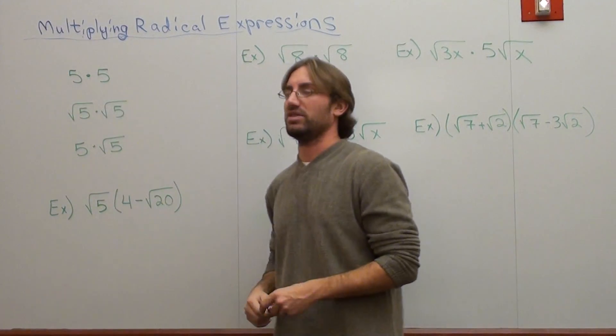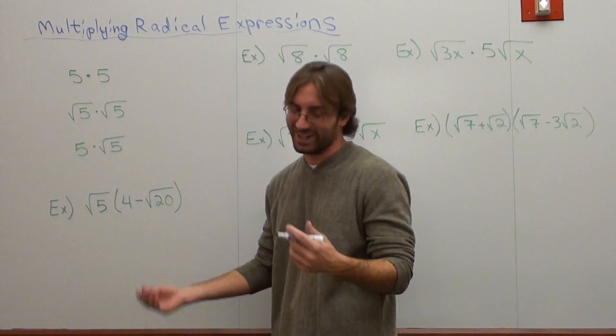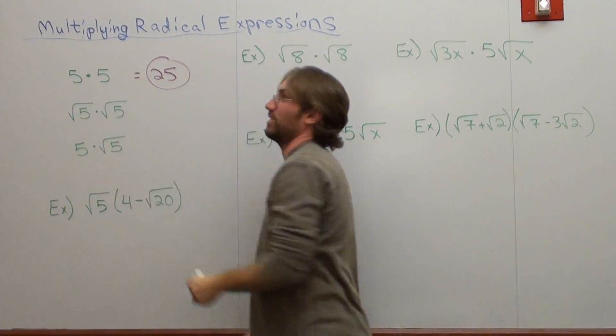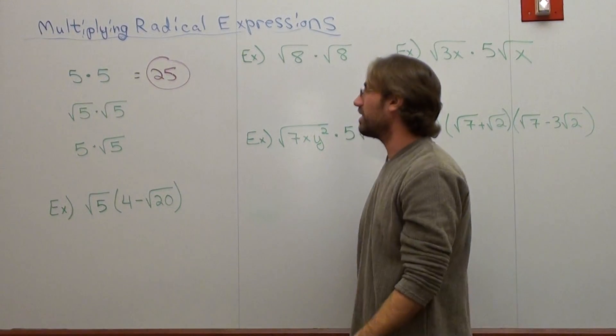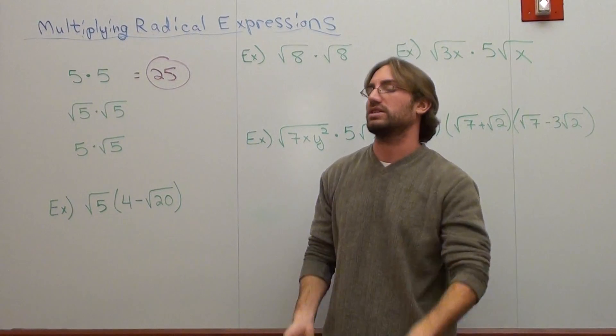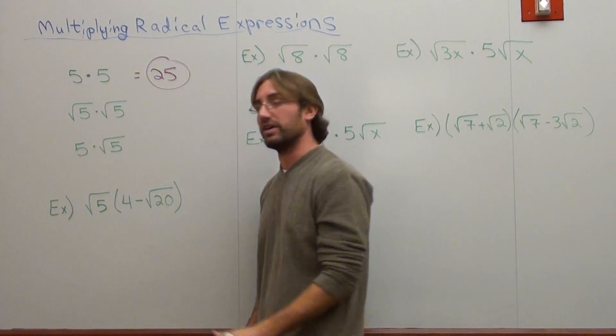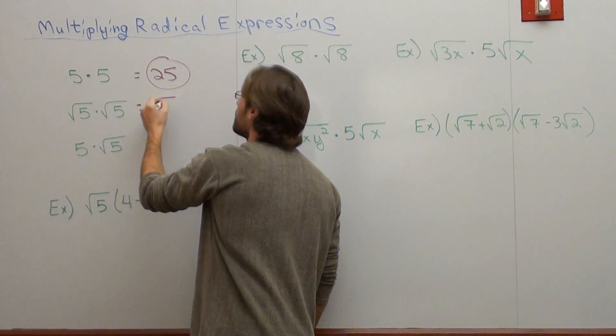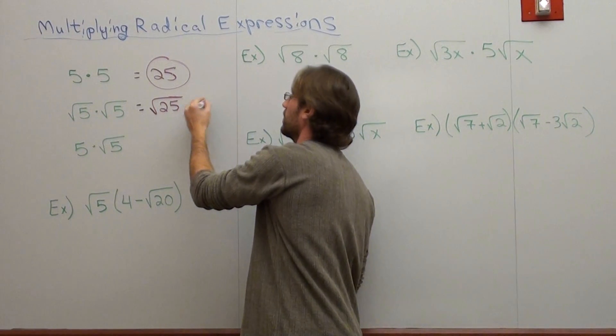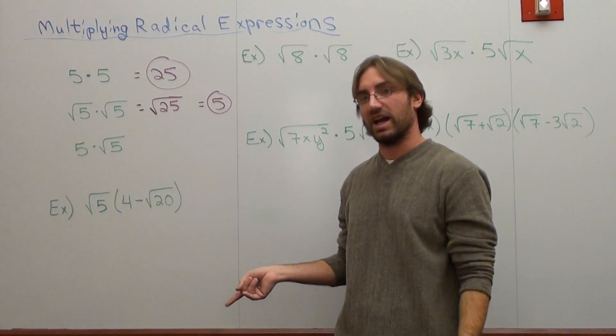So I ask my students what 5 times 5 is. They say it's 25. Then I ask them, what's the square root of 5 times the square root of 5? Now they're a little bit more hesitant. They say, is it the square root of 25? I'm like, it is the square root of 25. But the square root of 25 is just 5 when you simplify it. And that's actually when I stop the class and I say,